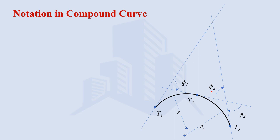If we extend the back tangent and the forward tangent, they are going to meet at a point. The total deflection angle is the addition of deflection angle 1 and deflection angle 2. Let's say A is the start point, B is the point of intersection, C is the end point of this compound curve, D is the point of intersection for tangents of the shorter curve, and E is the point of intersection for tangents of the large curve. The distance from T1 to D is the tangent length for the short curve; similarly, the distance from T3 to E is the tangent length for the large curve.